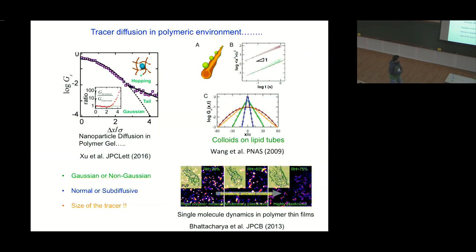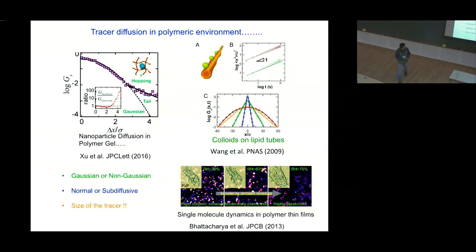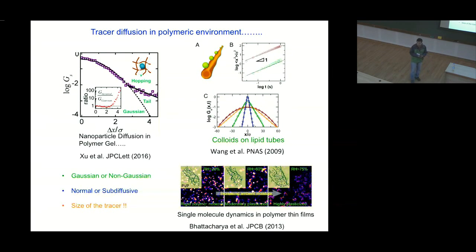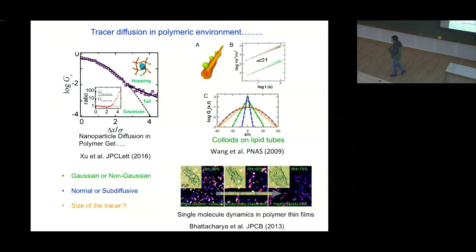The motivation of the talk comes from experiment. About eight years back, from the group of Steve Granick at Urbana-Champaign, they did some experiments on soft materials. They looked at colloidal particles on a soft lipid tube, and when they calculated the mean square displacement of this colloidal particle as a function of time, they found normal diffusion — scaling linearly with time. But when they calculated the displacement distribution, they found something interesting: not the usual Gaussian distribution. Initially it's something more like exponential.